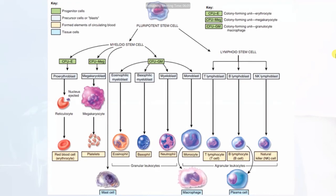The pluripotent stem cell divides into myeloid stem cells and lymphoid stem cells. Myeloid stem cells give rise to pro-erythroblasts and megakaryoblasts (precursor cells), which form reticulocytes and platelets respectively. The colony-forming unit — granulocyte, monocyte, macrophage (CFU-GMM) — produces eosinophils, basophils, neutrophils, and monocytes from their respective myeloblasts. From the lymphoid stem cell: T lymphoblasts give rise to T cells, B lymphoblasts give rise to B cells, and NK lymphoblasts give rise to natural killer (NK) cells.